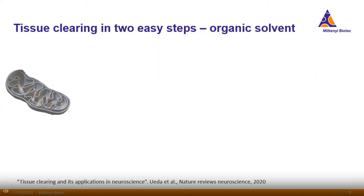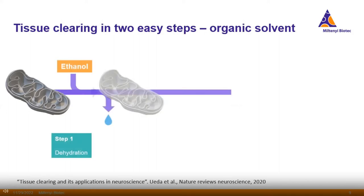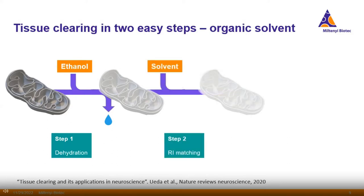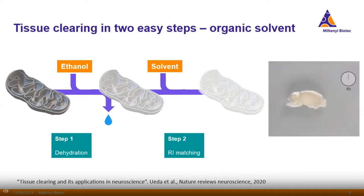For the next step, tissue clearing—maybe some of you have heard of this—basically what you do is render the tissue transparent. We add ethanol for dehydration and a solvent for matching the refractive index, which turns the brain tissue within several hours almost transparent, making it possible to analyze every layer of the brain.